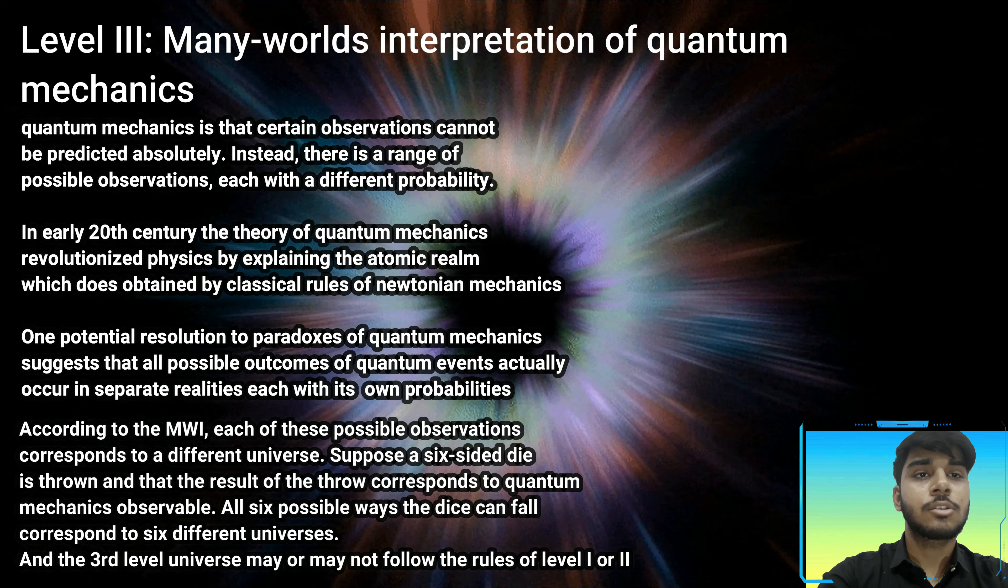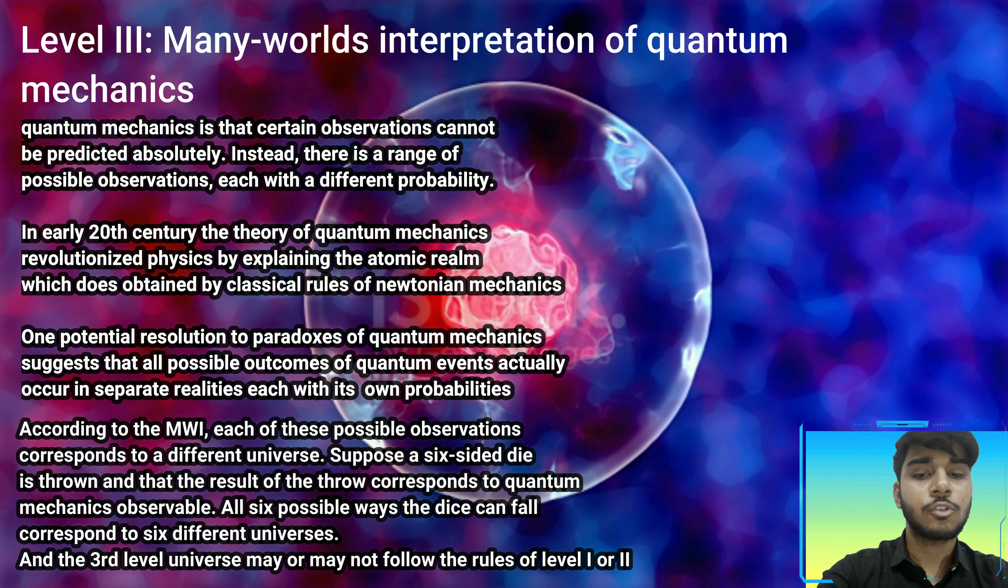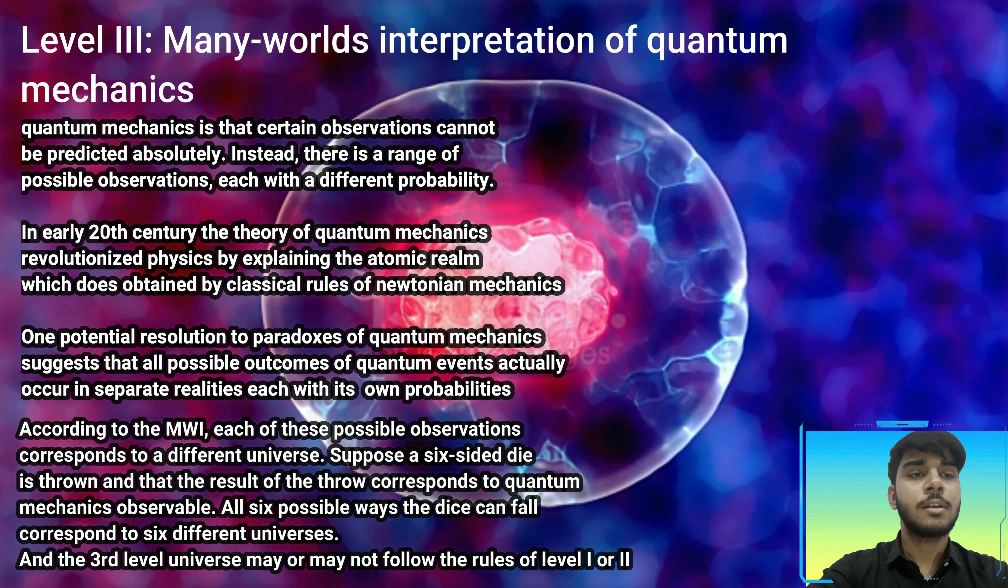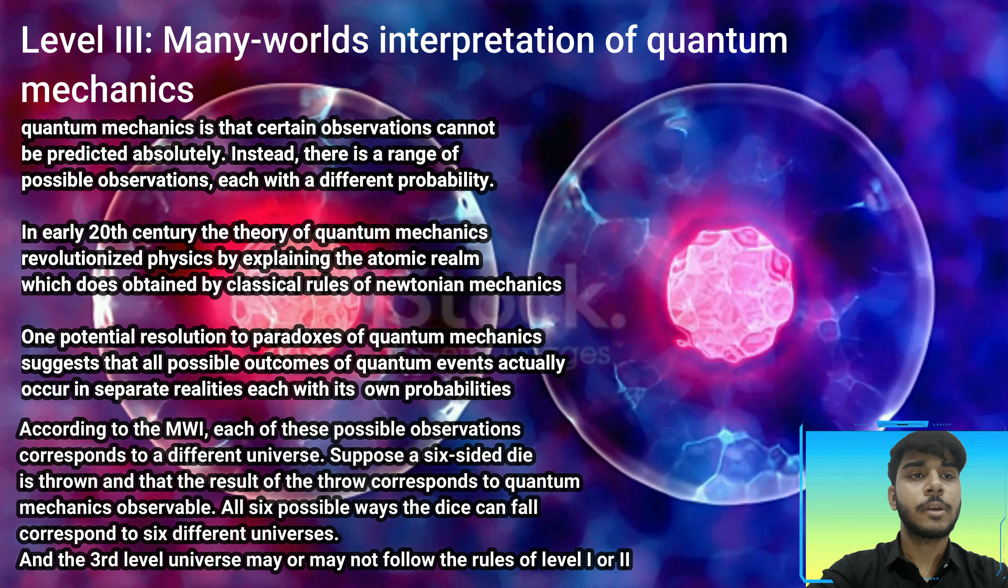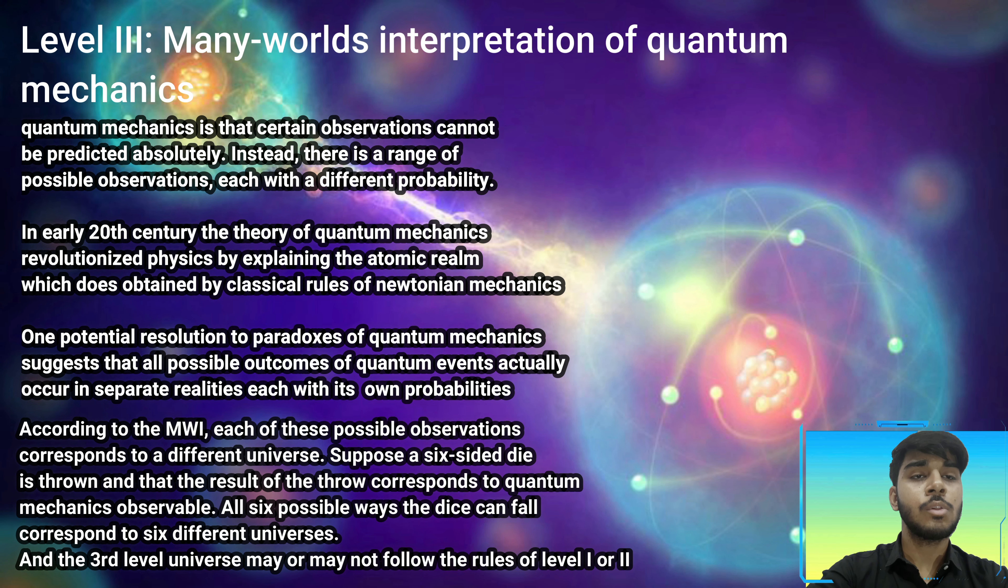Suppose a six-sided die is thrown and the result of the throw corresponds to a quantum mechanics observation. All six possible ways the dice can fall correspond to six different universes. This means if we consider an event that obeys quantum mechanics and we predict all the possibilities of that event, all those events may exist in different worlds in different places.